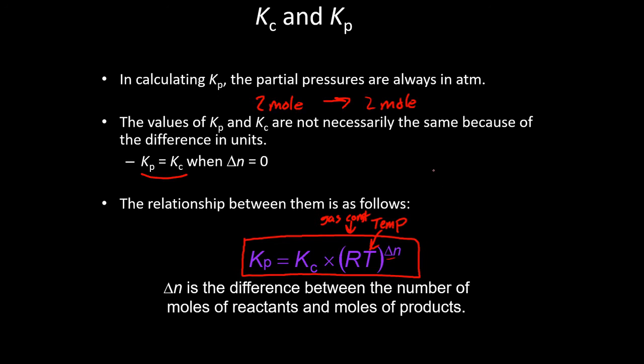And so this will be products minus reactants, like any other delta value. So how many moles of gas do we have as products, minus however many we have as reactants. So if we end with three and we started with two, delta N would be one. We got one more mole of gas. And if it was flipped, then delta N would be minus one. Just whatever the case may be. But that is how we're going to convert between Kp and Kc.